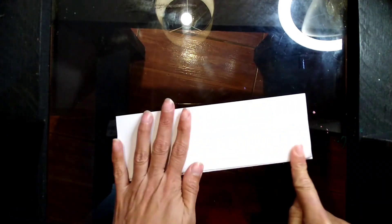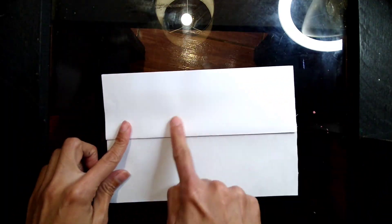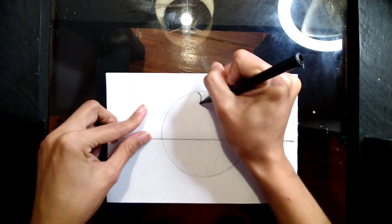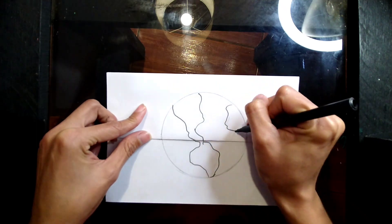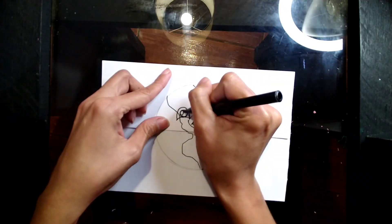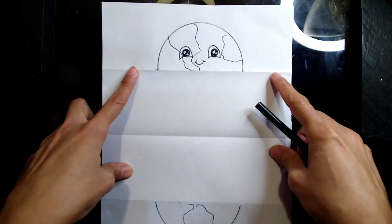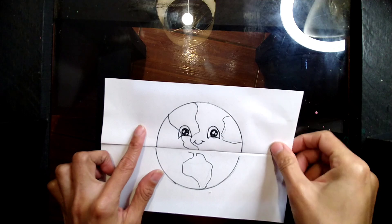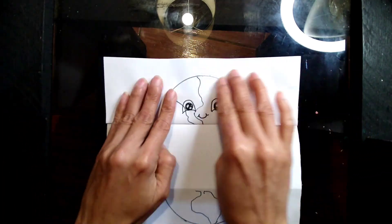We're going to start drawing here. Let's trace the shape of the countenance, it doesn't have to be perfect. Now unfold it. If you want to use all this space, good. In my case I'm going to make it smaller by folding the paper one more time just like this.